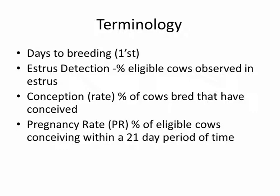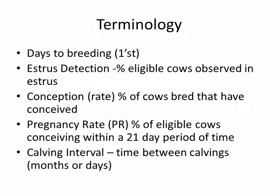So pregnancy rate is really a function of the estrus detection rate — how quickly are we seeing cows every 21 days — and the conception rate; in other words, of those cows that we see and indeed breed, what percent of those get pregnant. Calving interval is another term in the reproductive language, and it is the time between calvings and can be presented in terms of months or days.